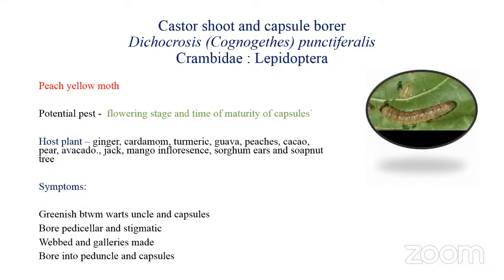When the egg is laid on the capsules, the caterpillar will start hatching and feeding on the greenish coat of the capsule in between the whorls. It will then enter the capsule by boring at the pedicellar or stigmatic end. At the site of feeding, it forms a silken gallery in which excreta and frass accumulate, forming a protective covering for the larva.